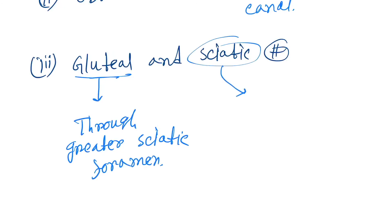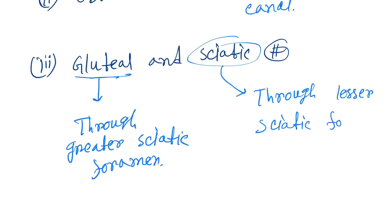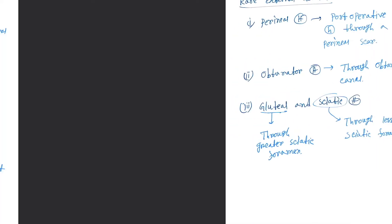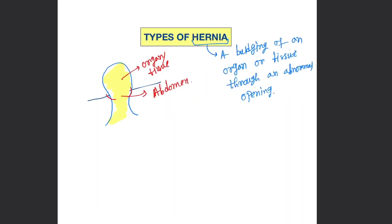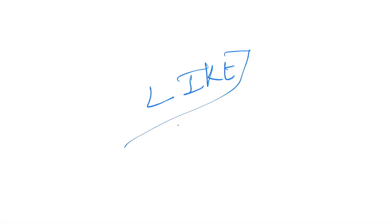The sciatic hernia is when the organ comes through the lesser sciatic foramen. That's all the types of hernia. If you like this video, please hit the like button and subscribe to the channel.